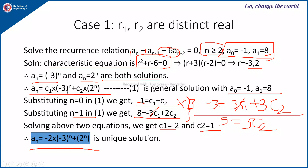Therefore, An = C1·(-3)^n + C2·(2)^n is the general solution. By substituting n = 0, we get -1 = C1 + C2. By substituting n = 1, we get 8 = -3C1 + 2C2. Solving this linear system gives C2 = 1 and C1 = -2. Therefore, substituting C1 and C2, the general solution is An = -2·(-3)^n + 1·(2)^n, for n ≥ 2.